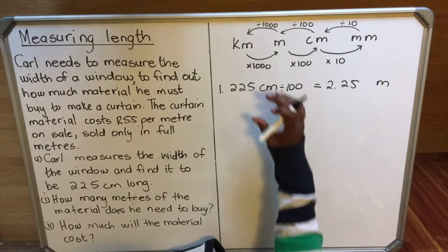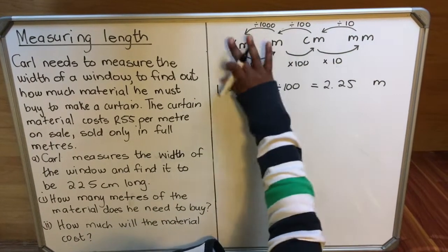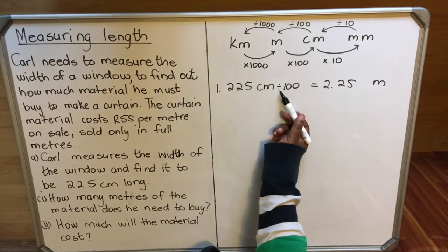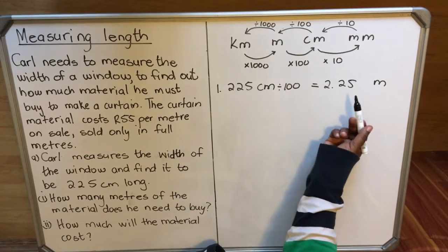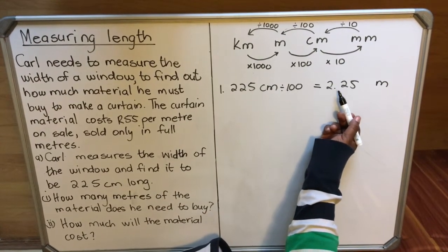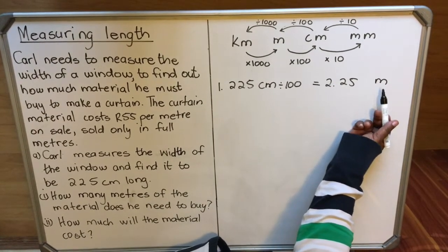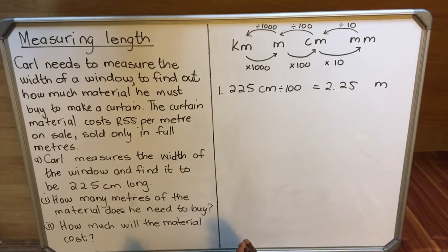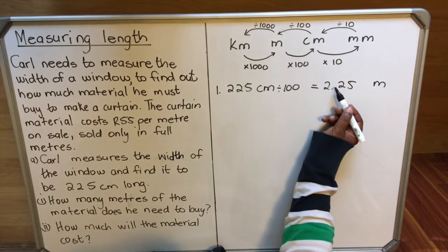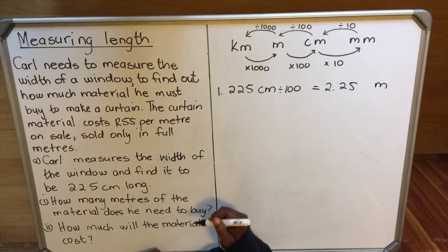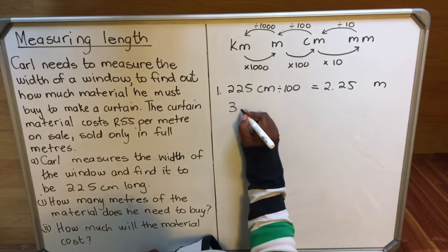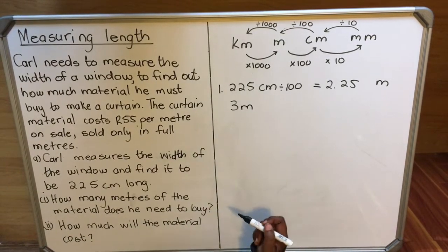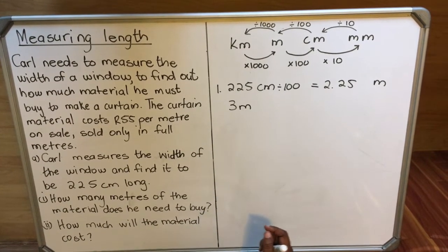When you're writing your exam you need to quickly write this. Write everything and then use it so that you don't make mistakes. So how many meters must he buy? He must buy 2.25 meters. But remember, in the shop they said they only sell full meters. So if he buys two meters they'll be short. He needs to buy three meters. The correct answer here is three meters, not two meters. When he buys two meters, half of the window will not be closed.